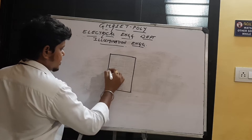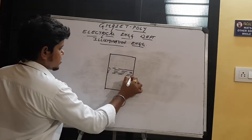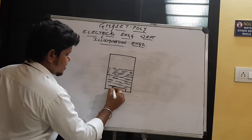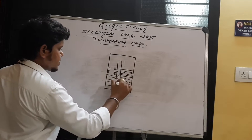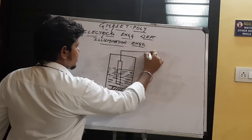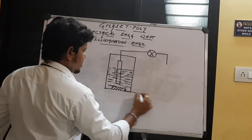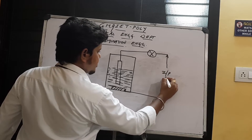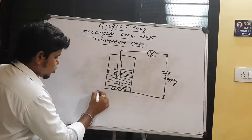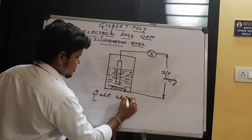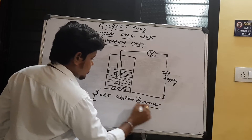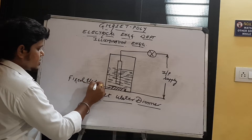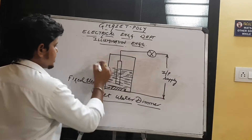This is the container. In that container, the salt water is filled. There are two electrodes. A lamp is connected in series. The diagram is a salt water dimmer. This is the fixed electric rod, and this is the movable electric rod.